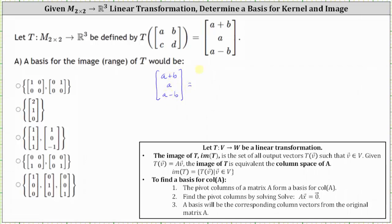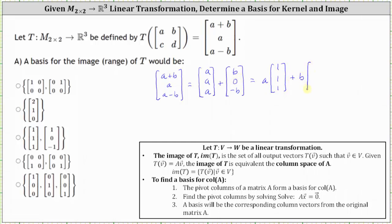We can write this as a sum of two vectors, where the first vector is (A, A, A) and the second vector is (B, 0, negative B). Factoring out A from the first vector gives us A times the vector (1, 1, 1), and factoring out B from the second vector gives us B times the vector (1, 0, negative 1). Notice this tells us that all the outputs are linear combinations of the vectors (1, 1, 1) and (1, 0, negative 1).